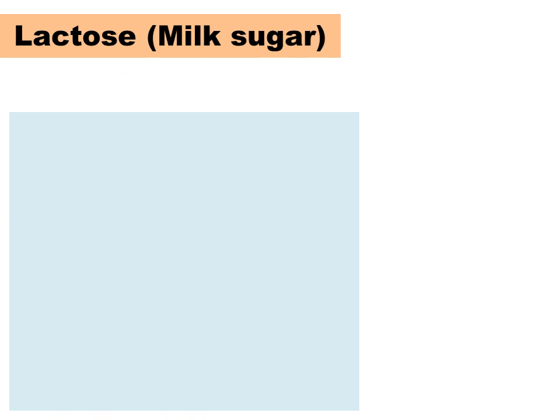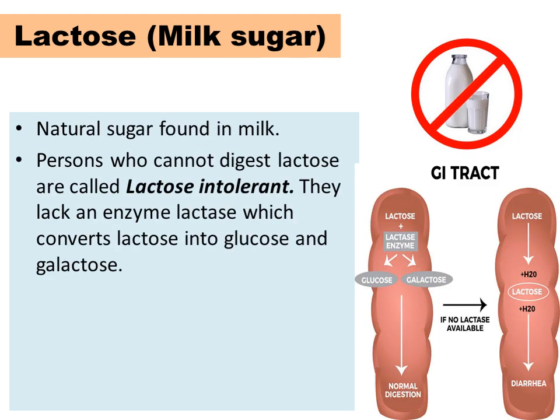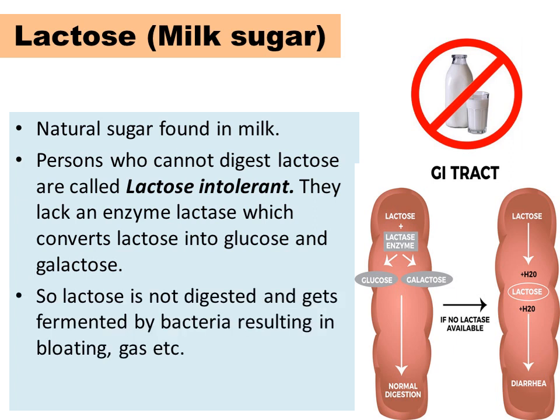Many people cannot digest milk and observe many symptoms. One of the reasons could be lack of an enzyme called lactase in their intestine, which digests lactose — a natural sugar found in milk — into glucose and galactose. This condition is called lactose intolerance. Lactose is not digested and gets fermented by bacteria in the intestine, resulting in bloating, gas and many other digestion problems.